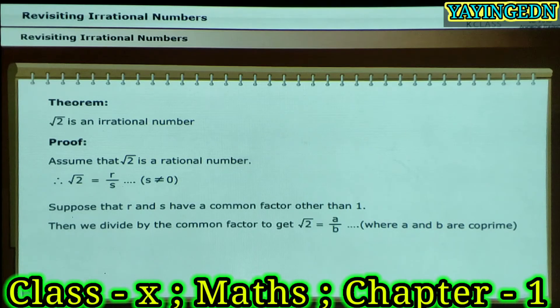Now, suppose that R and S have a common factor other than 1. Then we divide by the common factor to get square root of 2 is equal to A upon B, where A and B are co-prime. Therefore, B times root of 2 is equal to A.